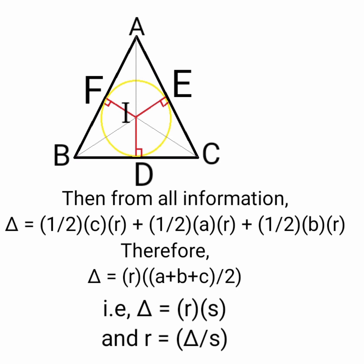As we have calculated these areas earlier, let us substitute them. Therefore, delta equals half times C times r, plus half times A times r, plus half times B times r. Then delta equals r times A plus B plus C divided by 2. Since S equals A plus B plus C divided by 2, delta equals r times S. Therefore, r equals delta divided by S.